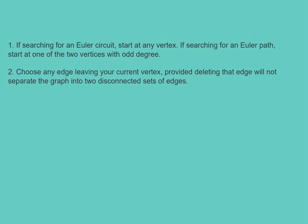Then, choose any path leaving your current vertex, provided that deleting that edge will not separate the graph into two disconnected sets of edges.